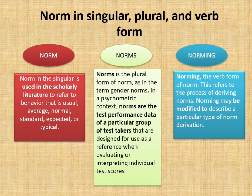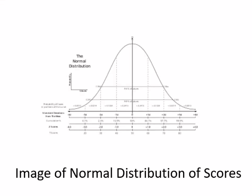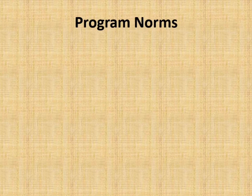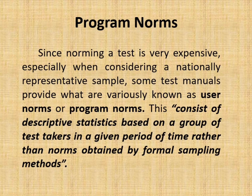Norming, the verb form of norm, refers to the process of deriving norms. Norming may be modified to describe a particular type of norm derivation. A normative sample is the group of people whose performance on a particular test is analyzed for reference when evaluating individual test takers. Since norming a test is very expensive, especially when considering a nationally representative sample, some test manuals provide user norms or program norms — descriptive statistics based on a group of test takers in a given period of time, rather than norms obtained by formal sampling methods.